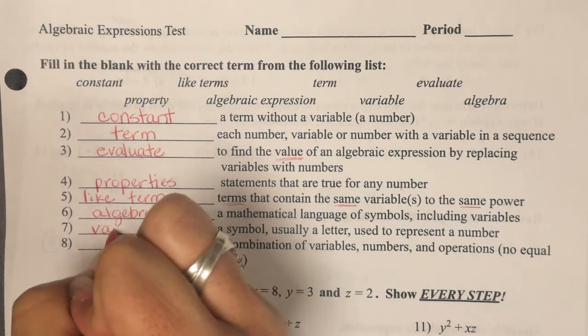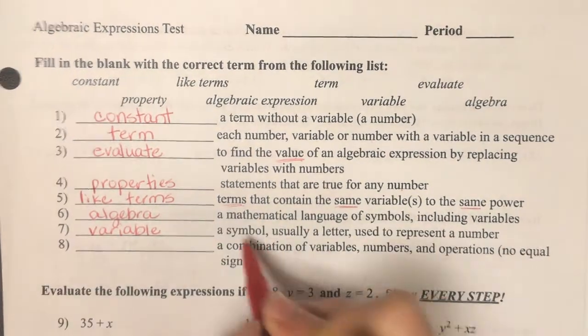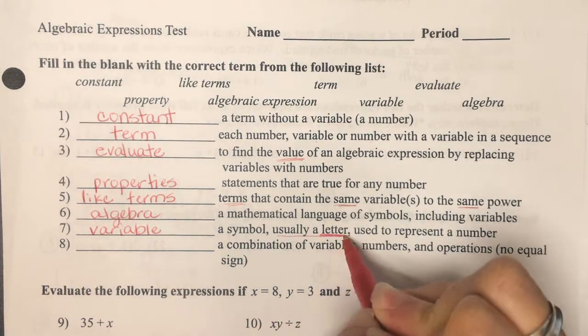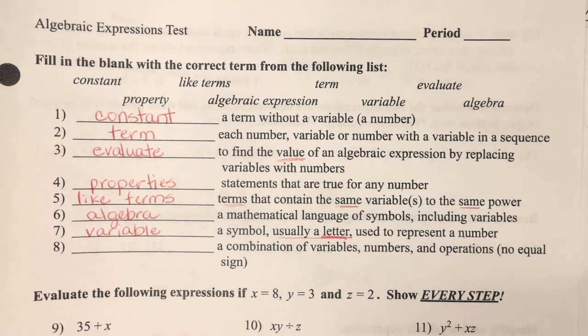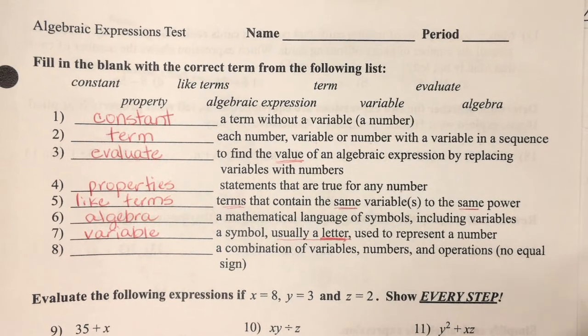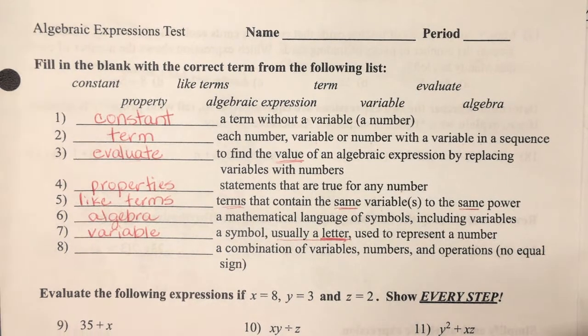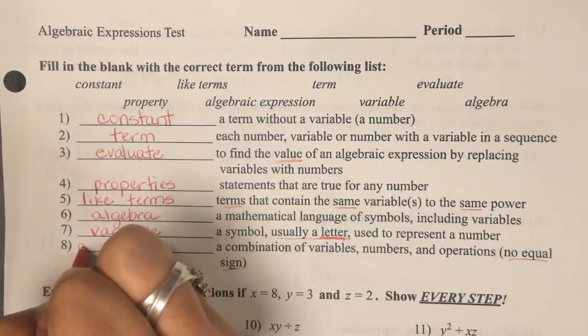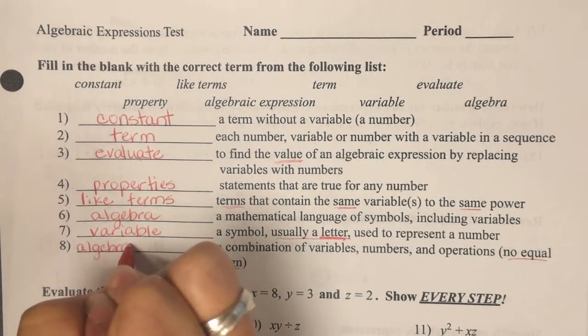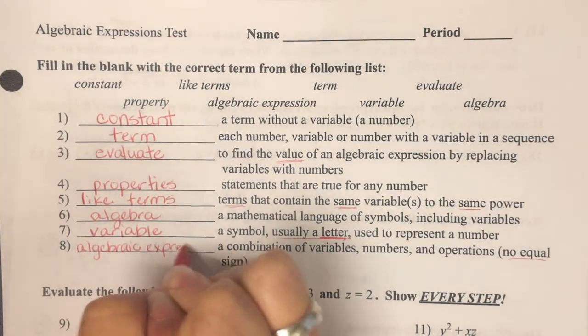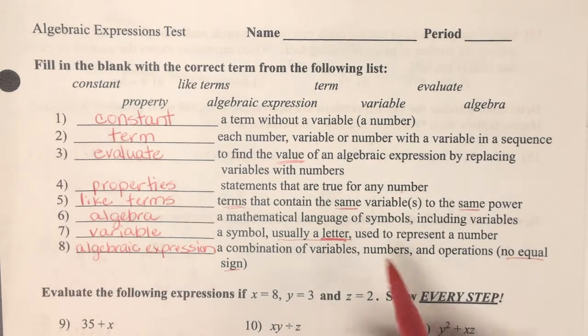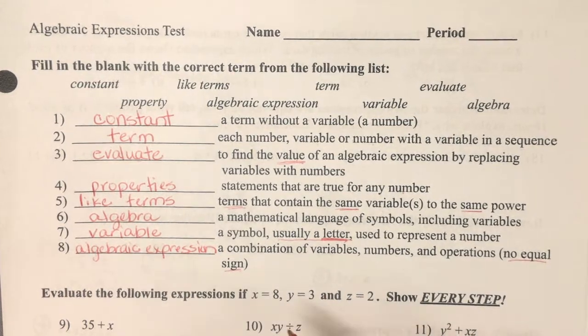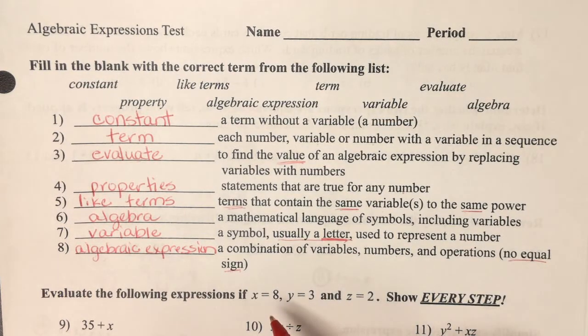A variable is a symbol, usually a letter. There's the key to that. Variable is a letter used to represent a number. And the last one there, an algebraic expression. The key was I kept telling the kids no equal signs. No equal signs. It has the variables, the numbers, the operations but expressions don't have equal signs.